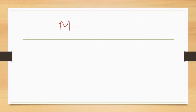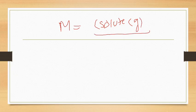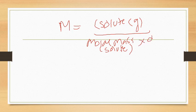Remember: molarity is represented by M and molality is represented by m. The formula is: solute in grams over molar mass of solute, multiplied by one over decimeter cube of solution. Now we substitute values for glucose first.